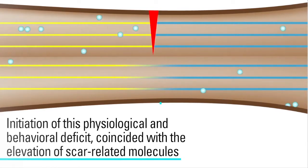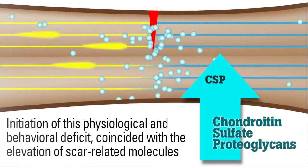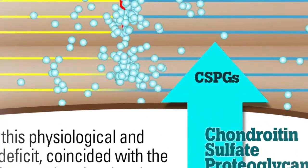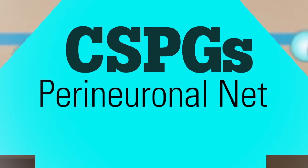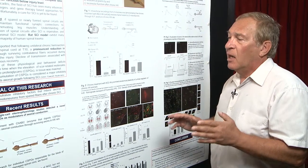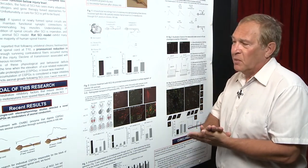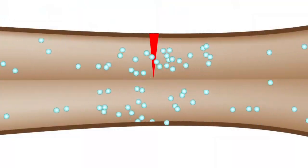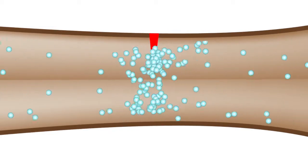These scar-related molecules are chondroitin sulfate proteoglycans, or CSPGs. CSPGs are an essential component of the perineuronal net and are always present in the CNS; however, the level of CSPGs is pretty low. After injury, when the glial scar is forming, there is a robust accumulation of CSPGs in the vicinity of the injury.